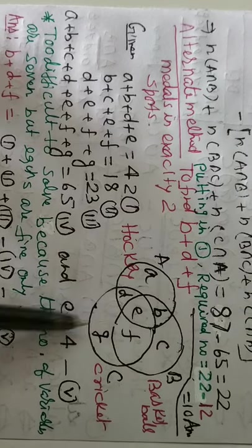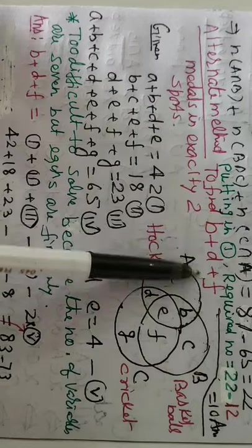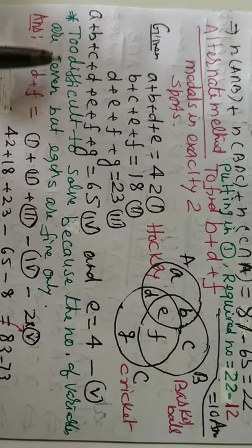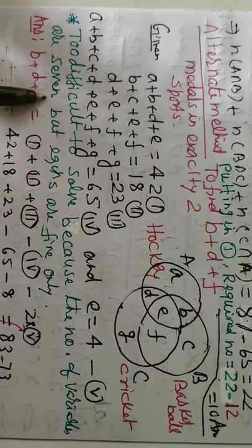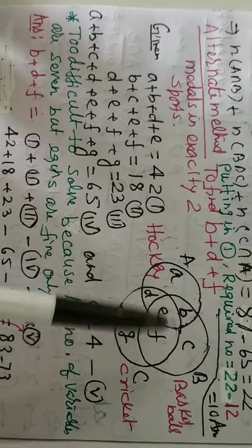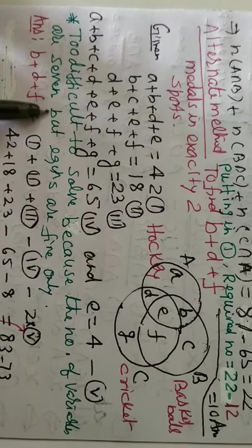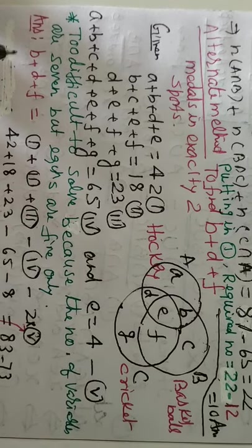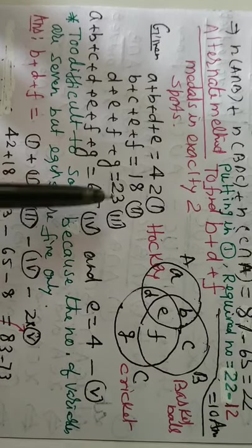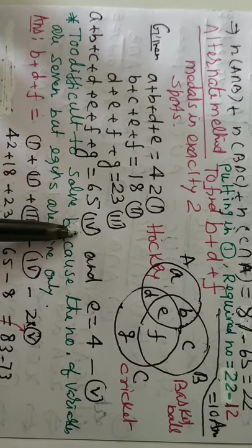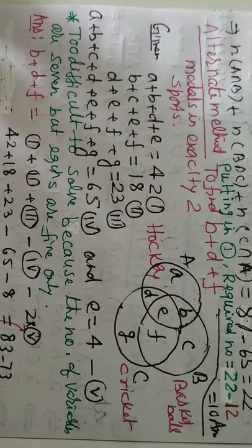Now, you have to solve in such a way that you are getting BDF. So, too difficult to solve. Because the number of variables are 7. 7 variables have been used. But equations are only 5. The answer this can be obtained from 1 plus 2 plus 3 minus 4 minus 2 times 5. Put the value and get the answer.